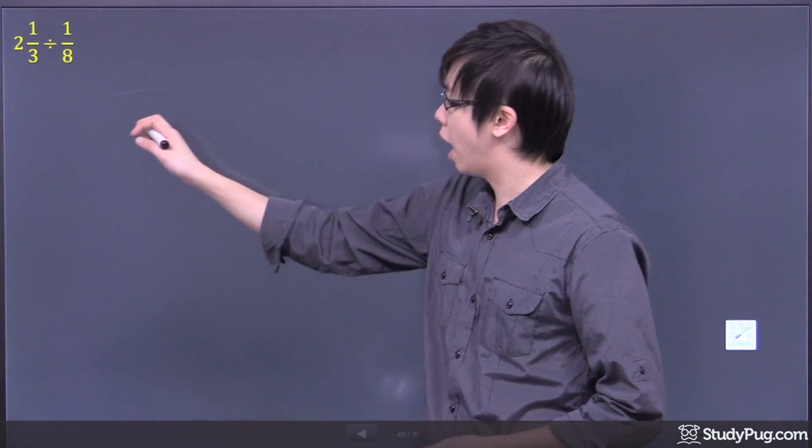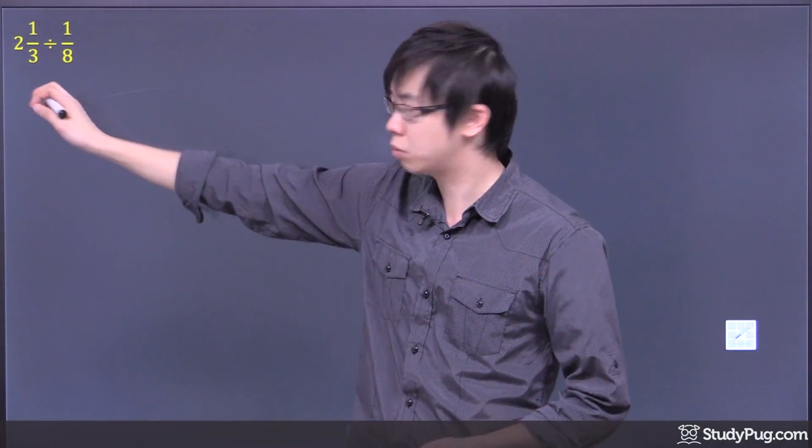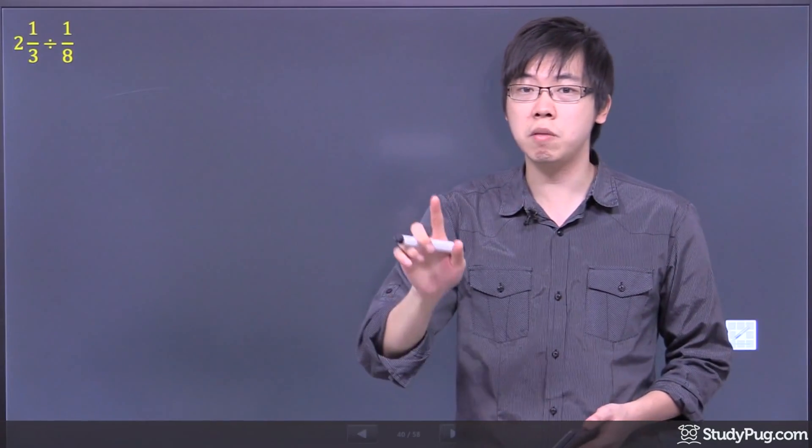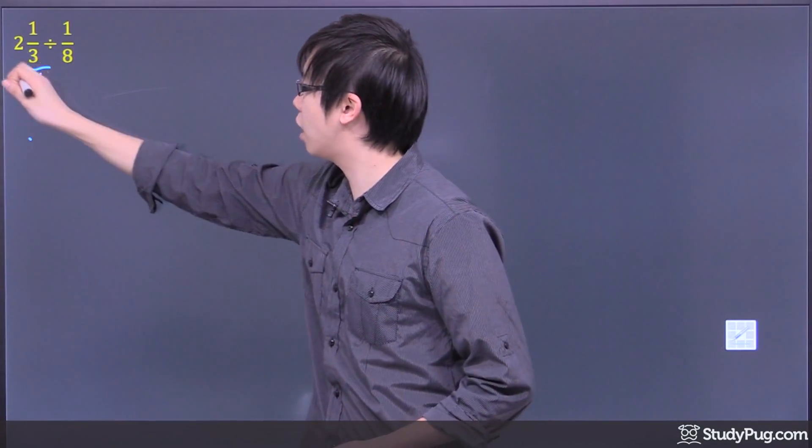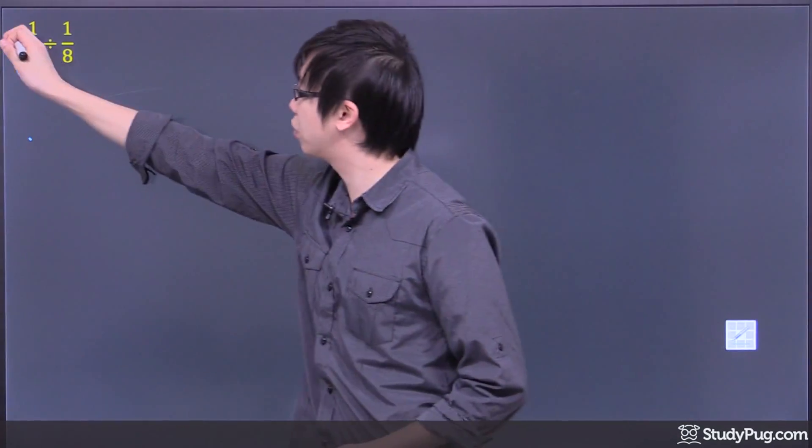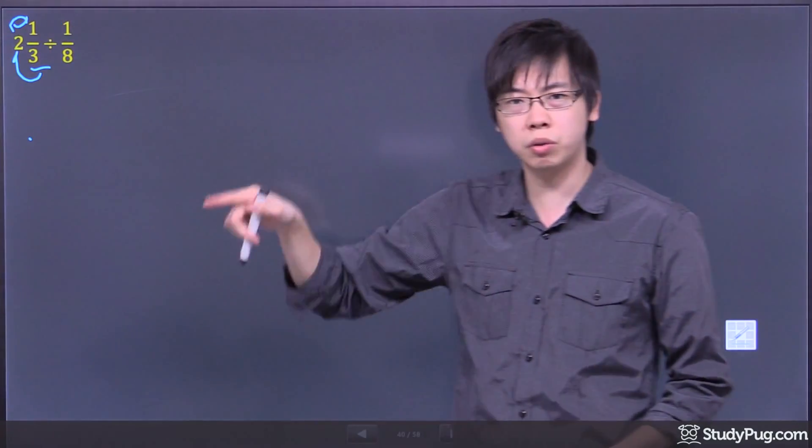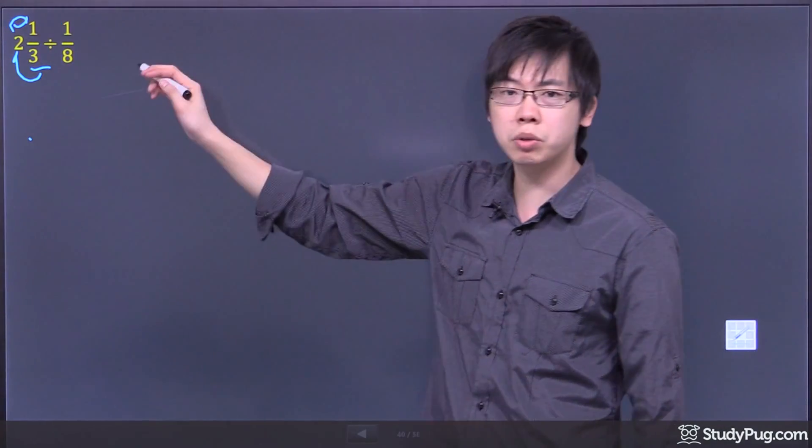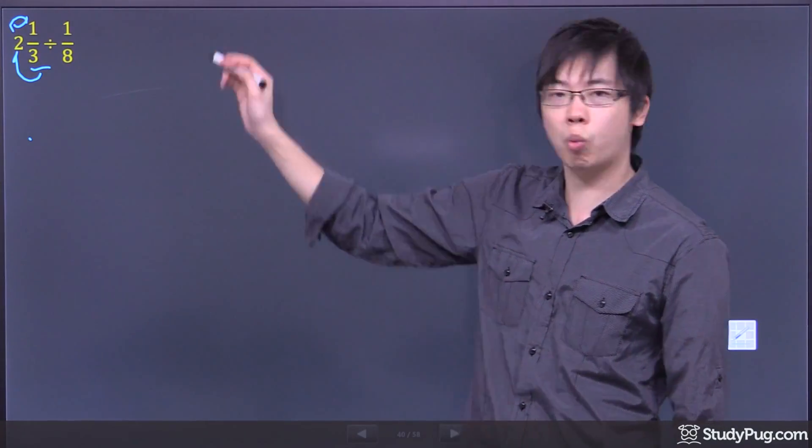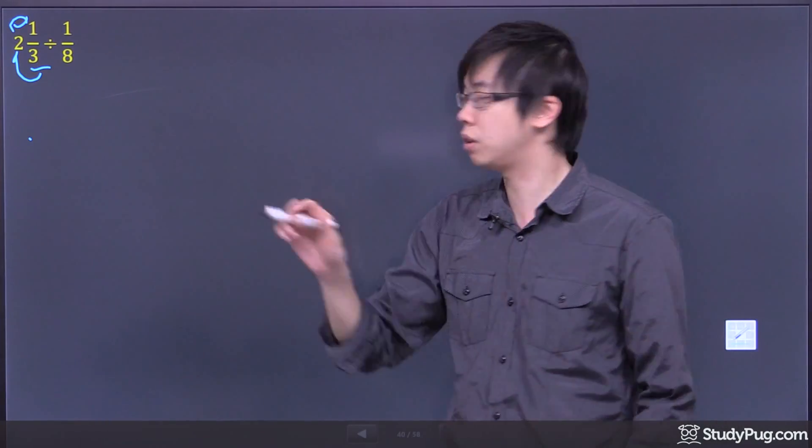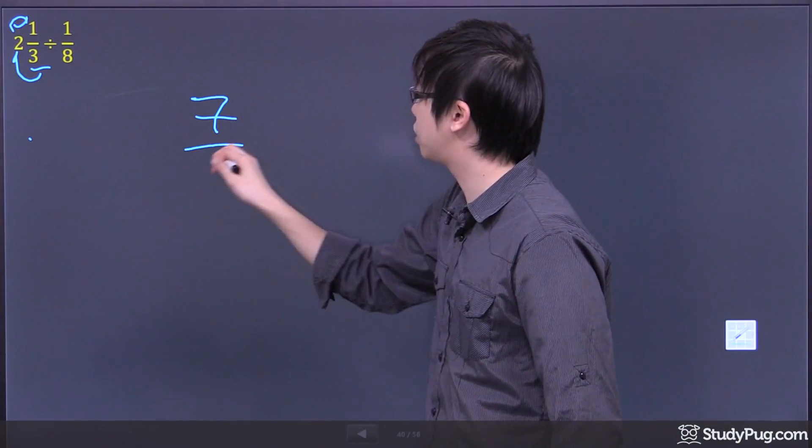Because what happens is if you go 3 times 2, remember we want to change into the improper fractions. So you would take the 3 and you would times by the 2 and then don't forget to add the 1 on the top. So it's like a little circle thing. So 3 times 2 is 6, 6 plus 1 gives you just 7. So the first one is 7/3, right?